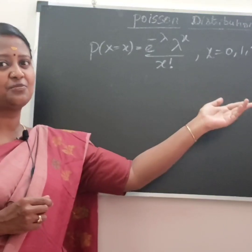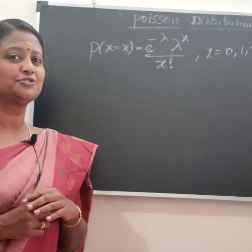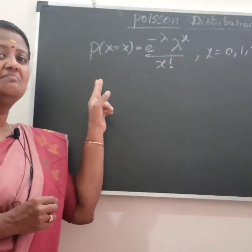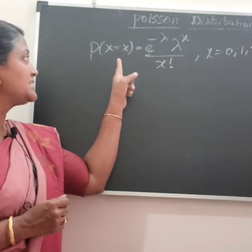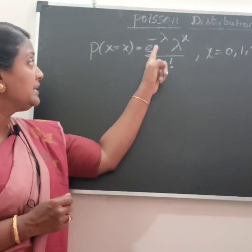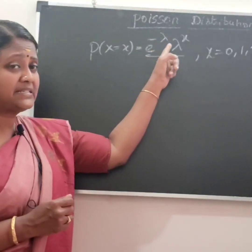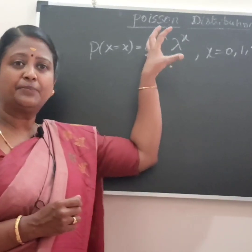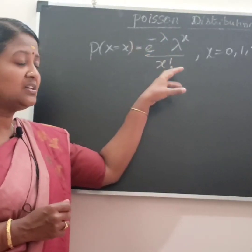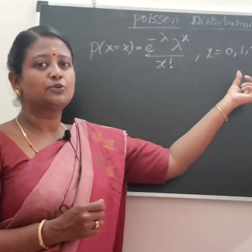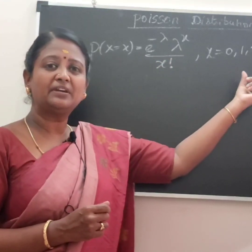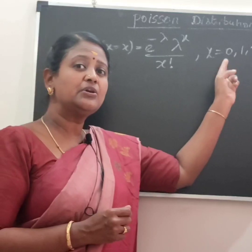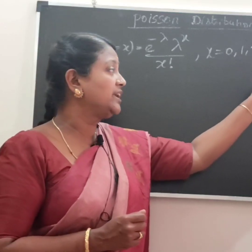You know the probability mass function. P(x) is equal to e to the power minus lambda, times lambda to the power x, divided by x factorial. This is the probability function, where x is equal to 0, 1, 2, 3, etc.